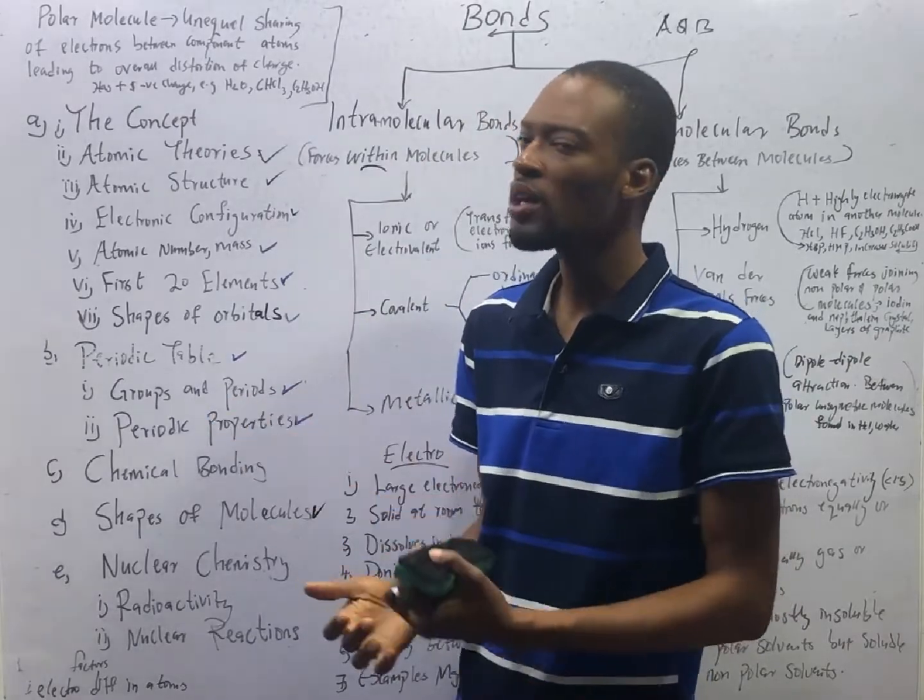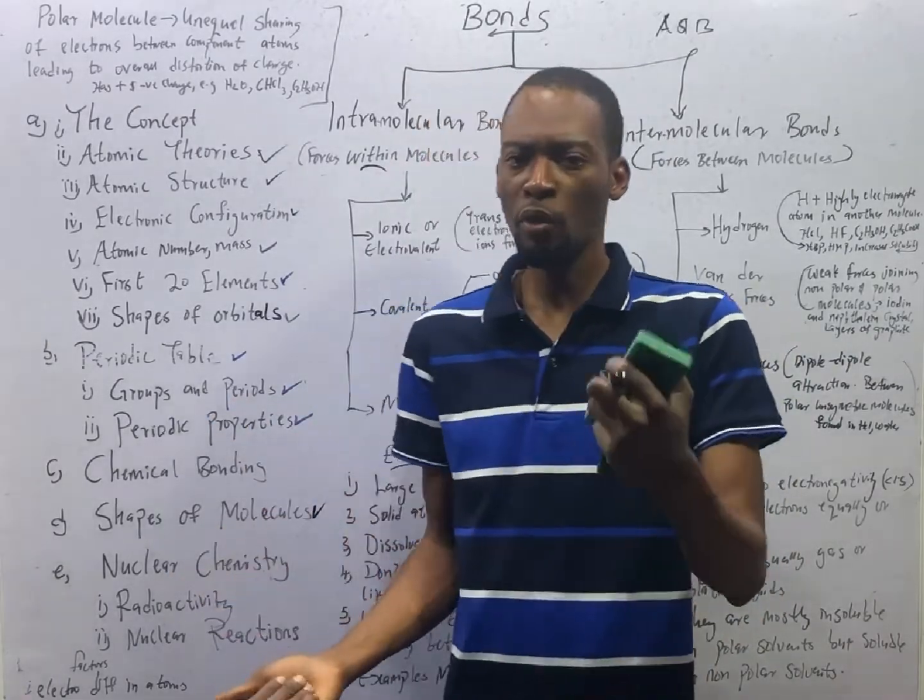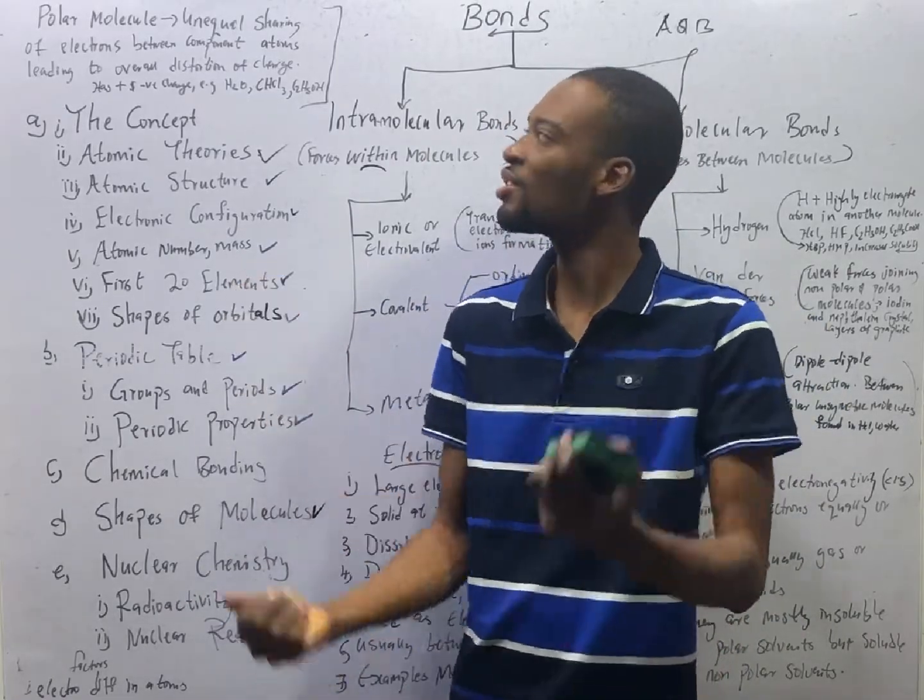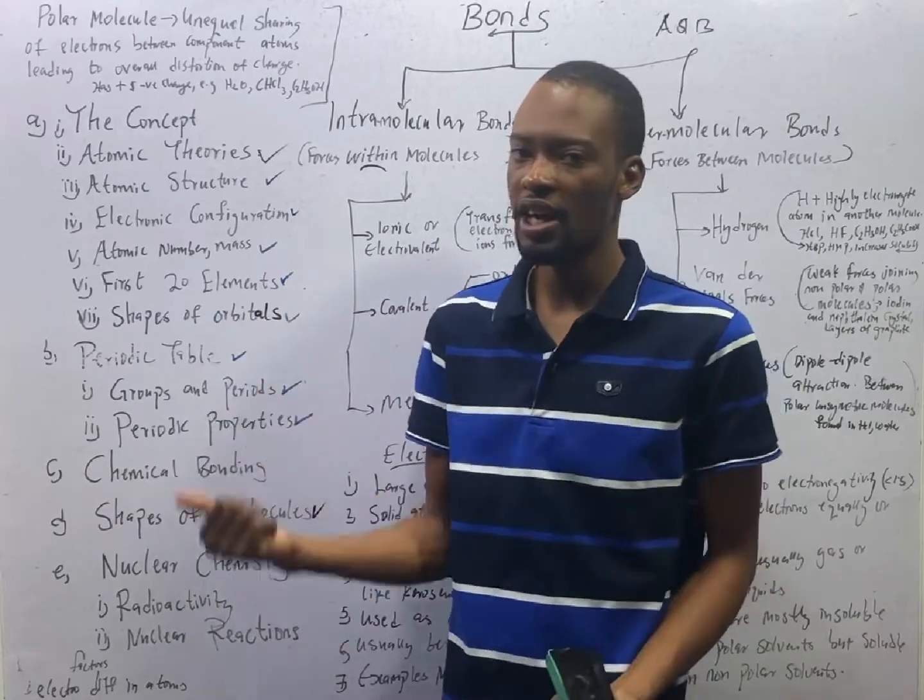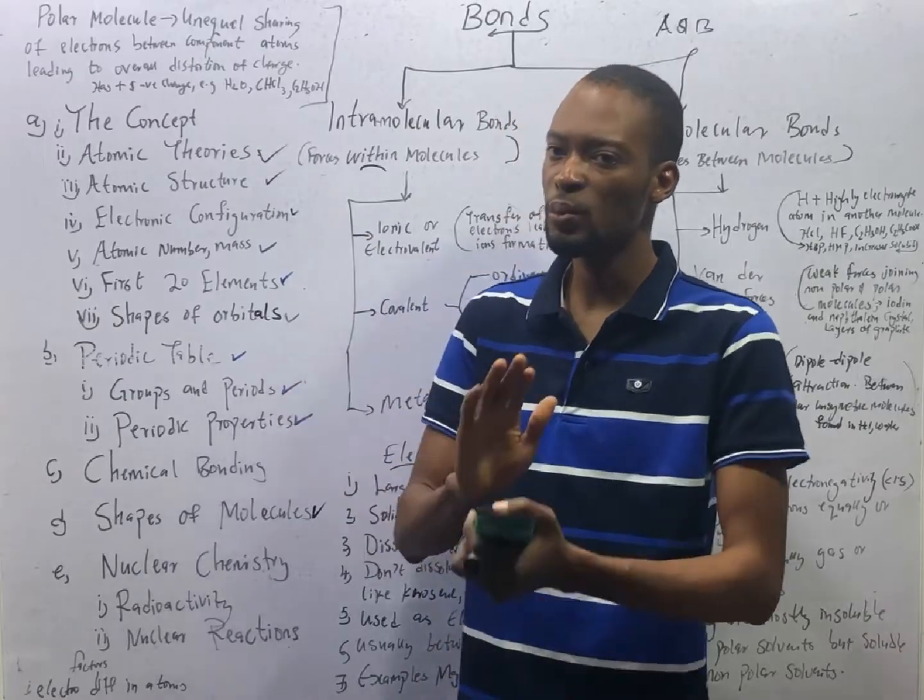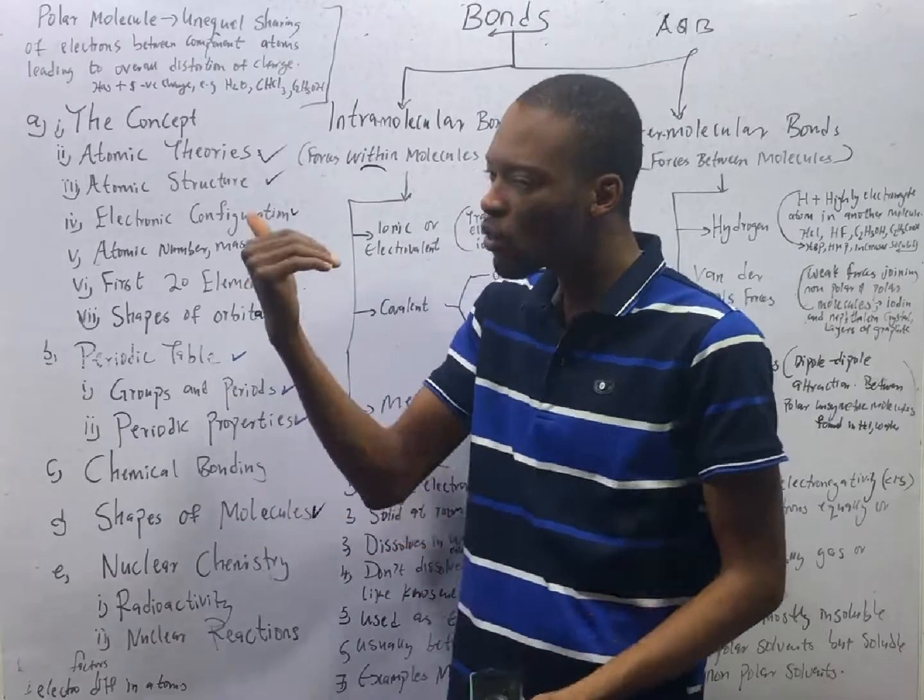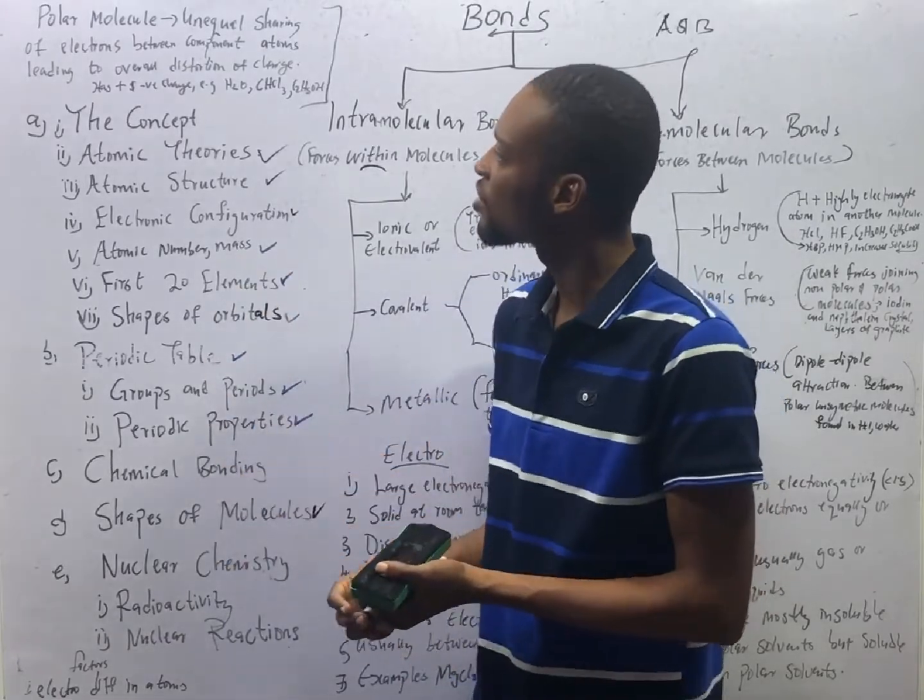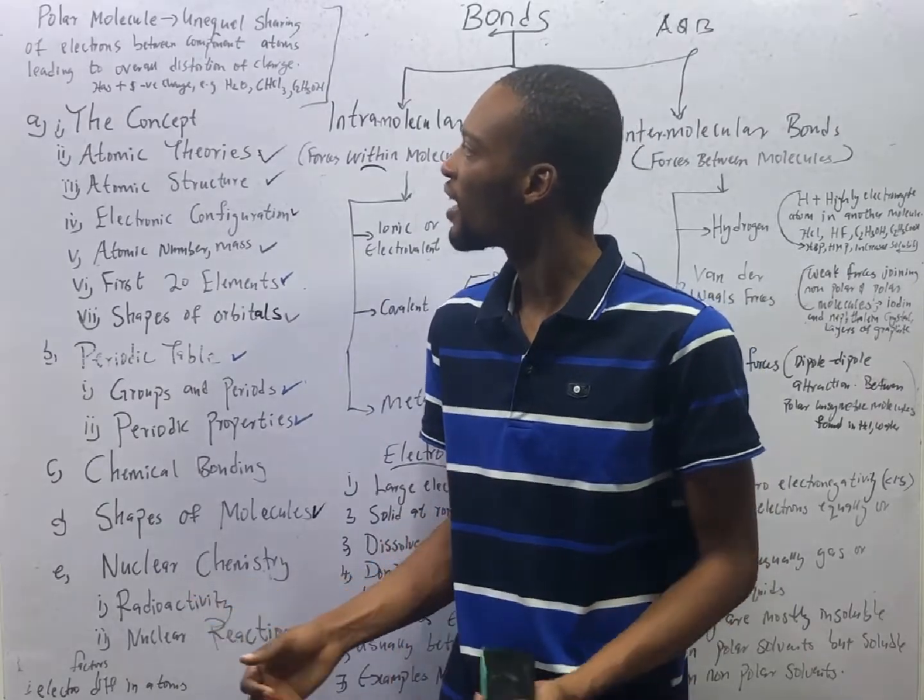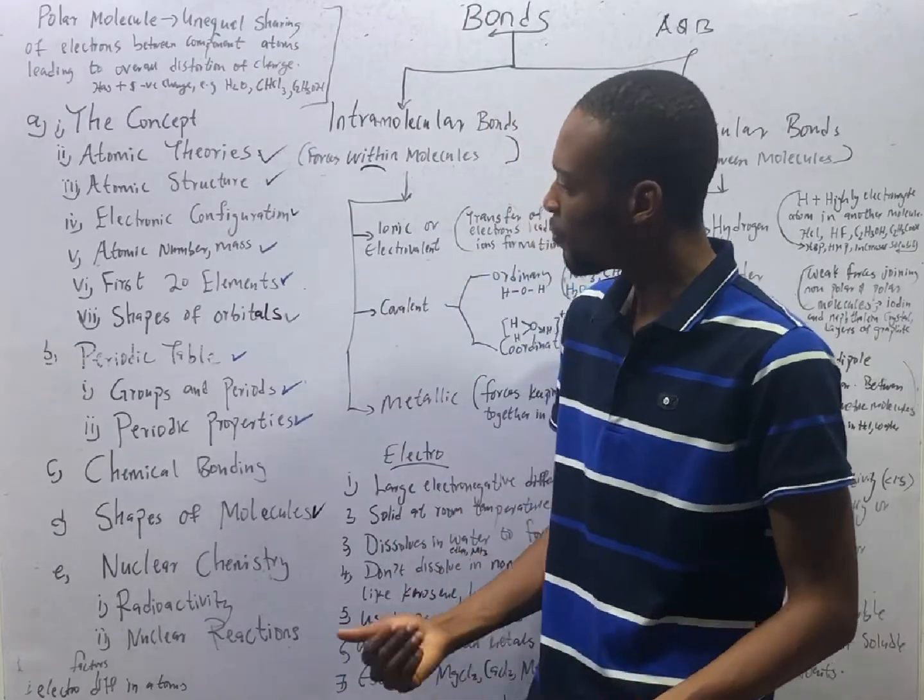What is polarity? A molecule is said to be polar. Polar molecules are molecules where there is unequal sharing of electrons. That will lead to distortion of the charge. Any molecule where you see there is a charge, positive charge or negative charge, is polar. But for non-polar, there is no charge at all because there is equal sharing of electrons between component atoms. Examples of polar molecules are water, trichloromethane and ethanol. These guys are polar.